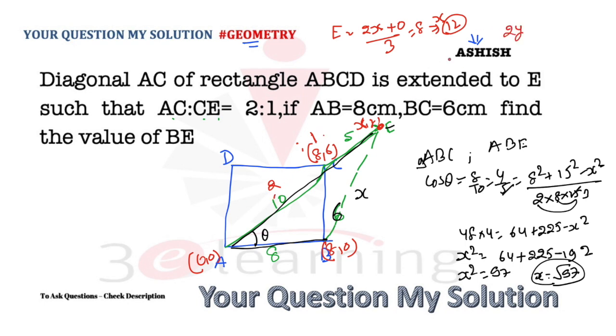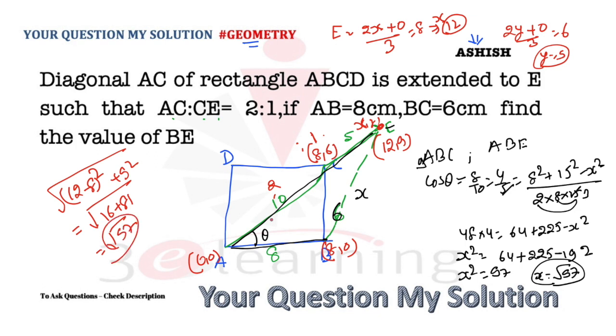The y-coordinate is 9. So the coordinate of E is (12, 9). From the distance formula: (12-8)² + 9² = 16 + 81 = 97. So the answer is √97. You can use coordinate geometry or the basic cosine formula - you will get √97. I hope this is okay with you.